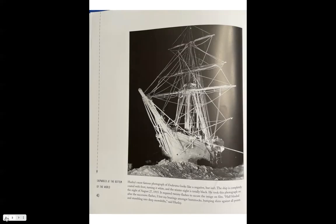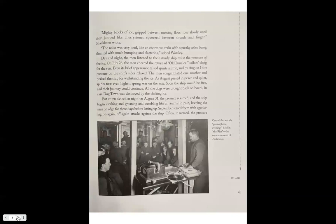In this picture, it says Hurley's most famous photograph of Endurance looked like a negative, but it isn't. The ship is completely coated with frost, turning it white, and the winter night is totally black. He took this photograph on the night of August 27, 1915. It required 20 flashes to secure the image on film. Half blinded after the successive flashes, I lost my bearings among hammocks, bumping shins against all points and stumbling into deep snow drifts, said Hurley. At the bottom, this picture shows one of the weekly gramophone evenings held in the Ritz, the common room of the Endurance.